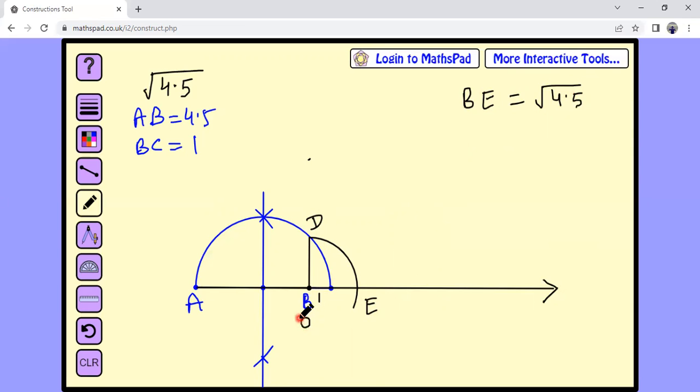If B will represent 0, towards the left of this, A will represent negative 4.5. So A is negative 4.5 because we have drawn a line segment of 4.5 towards the left of 0. B is the point 0 and E will be square root of 4.5. Just like this we can represent any real positive number on number line.